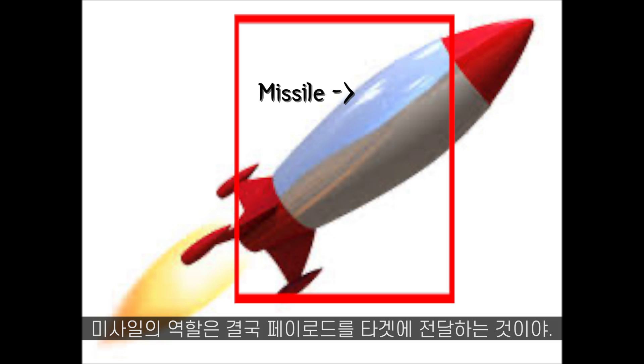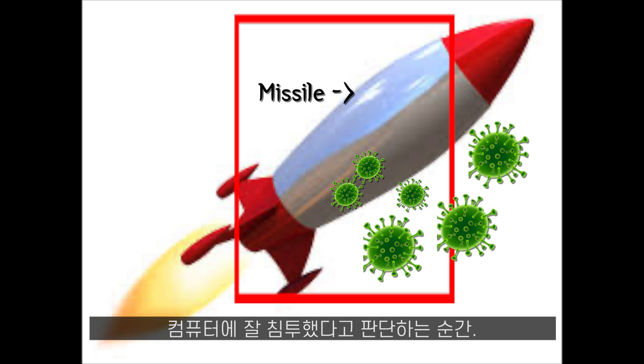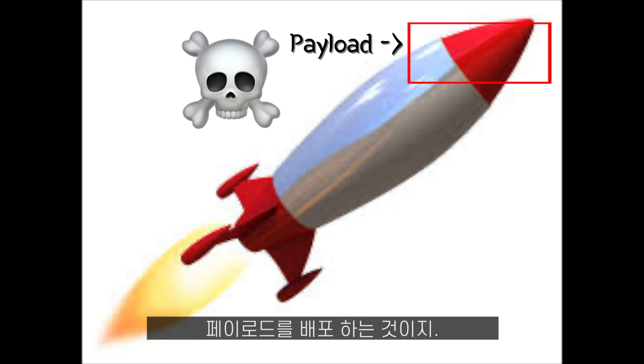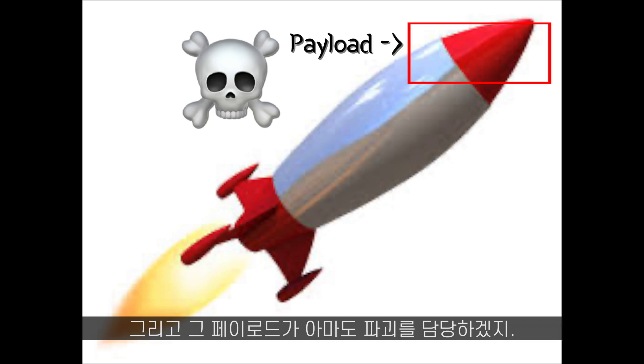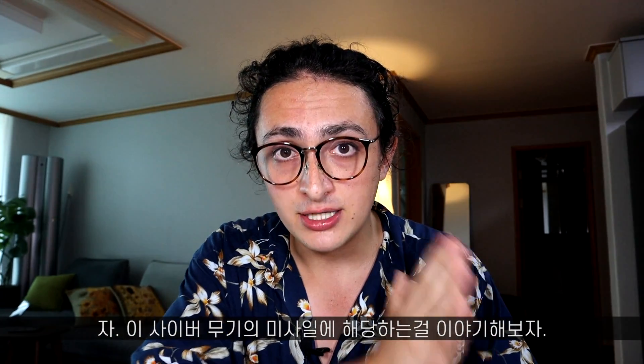The worm we're talking about today is an amazing piece of software. Cyber weapons are just like normal weapons: they need a missile and they need a payload. The missile part is used to take the payload to the target — it's the part in charge of getting inside the computer. Once it decides it should, it will deploy the payload. And the payload is usually the destructive part.